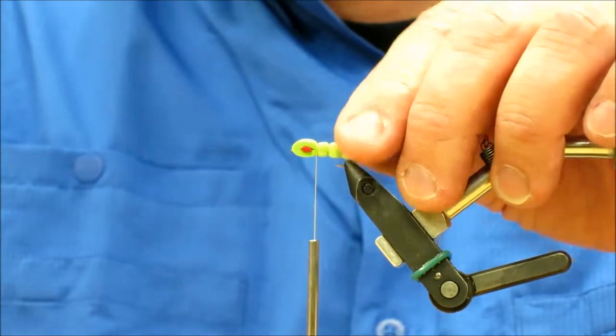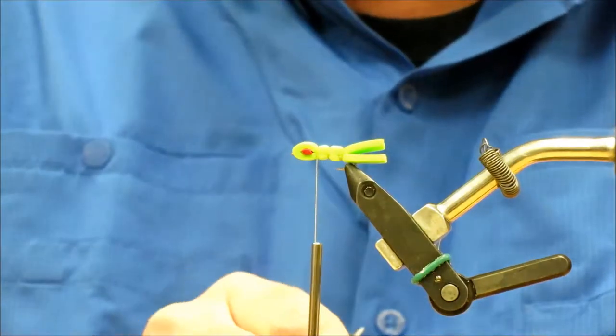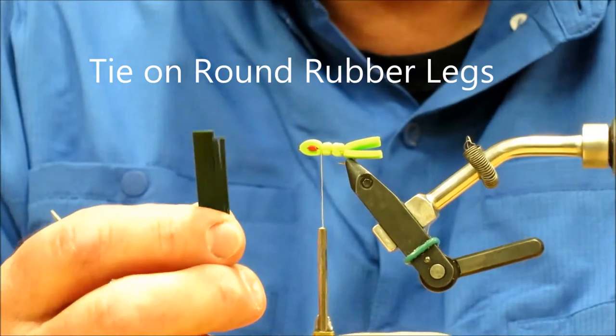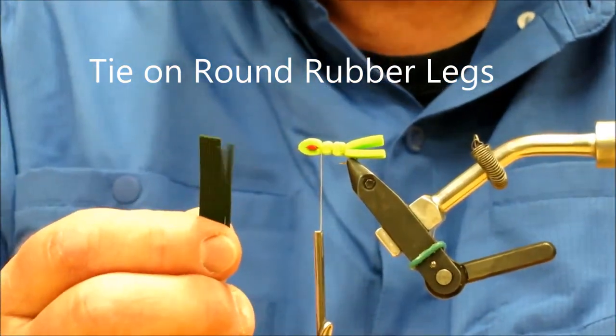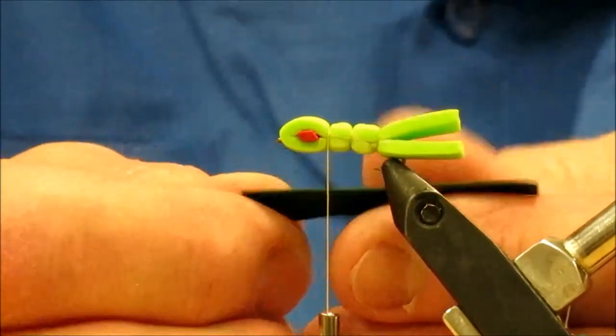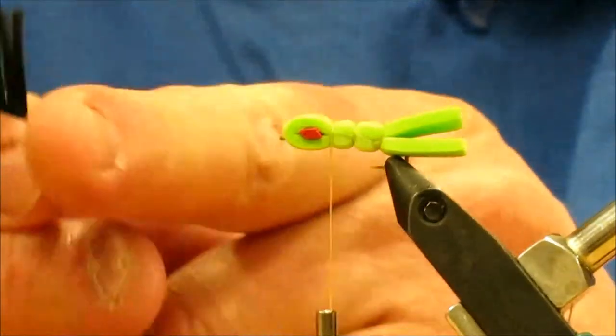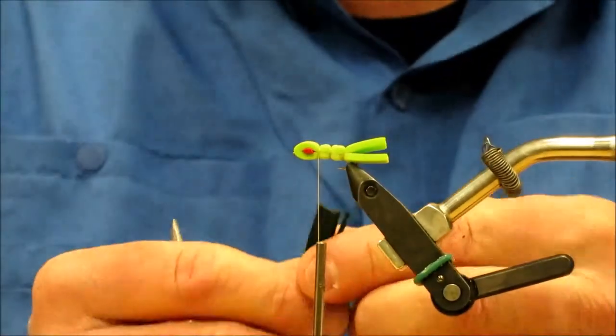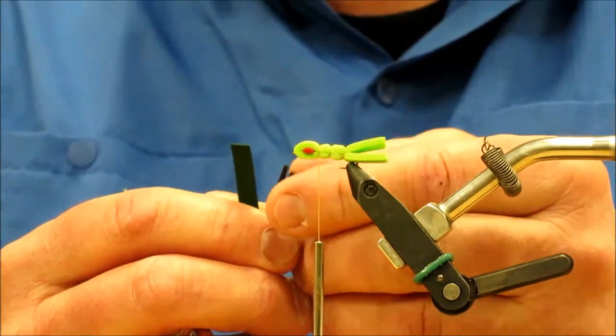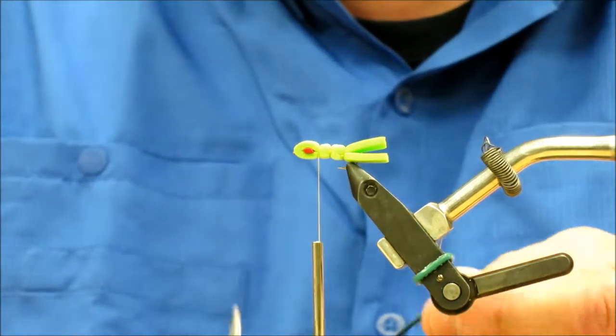The next thing I want to do is put on my legs. What I'm going to use are round rubber legs. These happen to be green, but you can get them in a lot of different colors. Then I take my strip and I figure out how long I want my legs to be and cut a whole strip off. I'm going to take these off in groups of two.